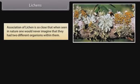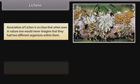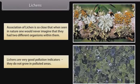Lichens prepare food for fungi, and fungi provide shelter and absorb mineral nutrients and water for their partner. The association of lichen is so close that when seen in nature, one would never imagine that they comprised two different organisms. Lichens are very good pollution indicators — they do not grow in polluted areas.